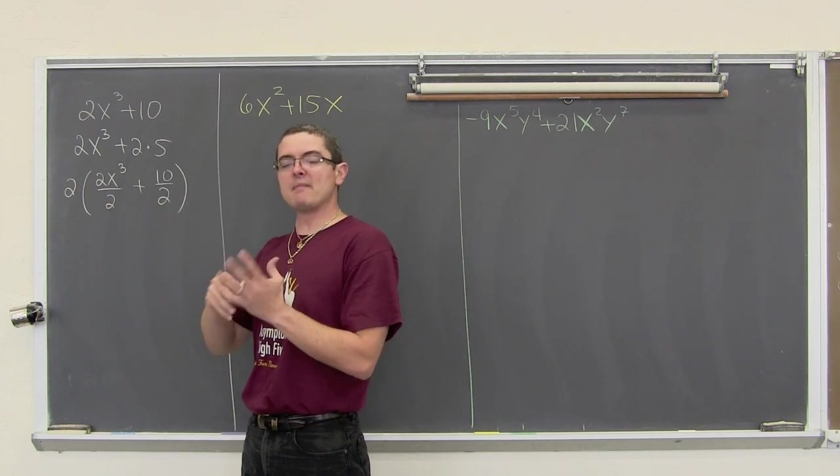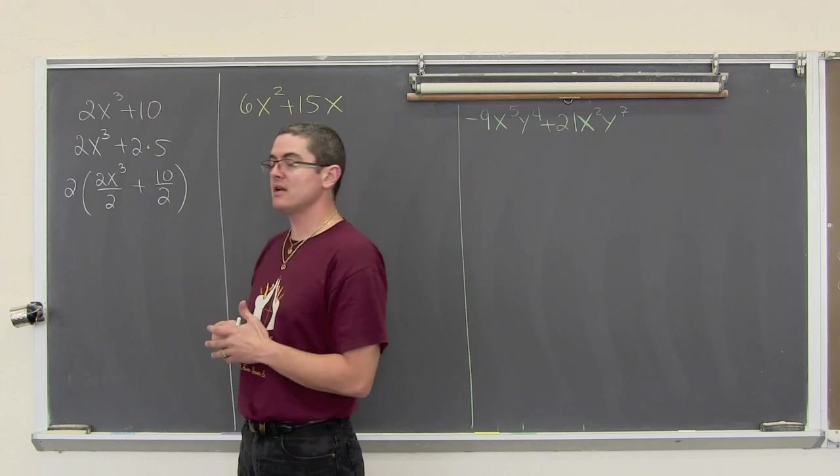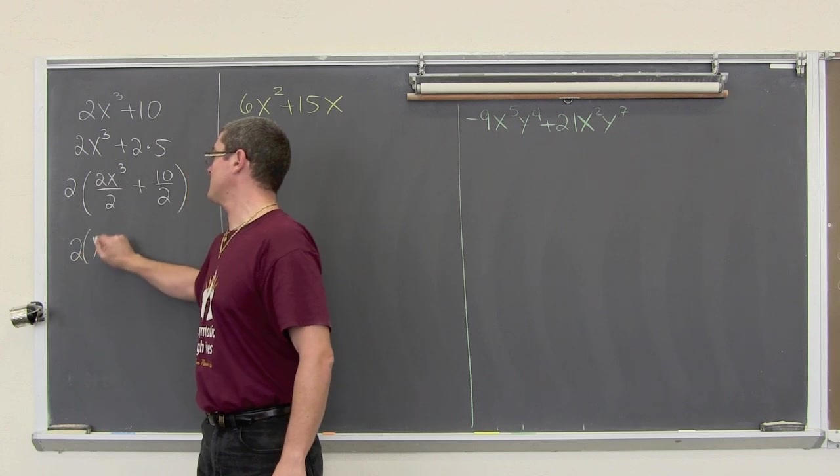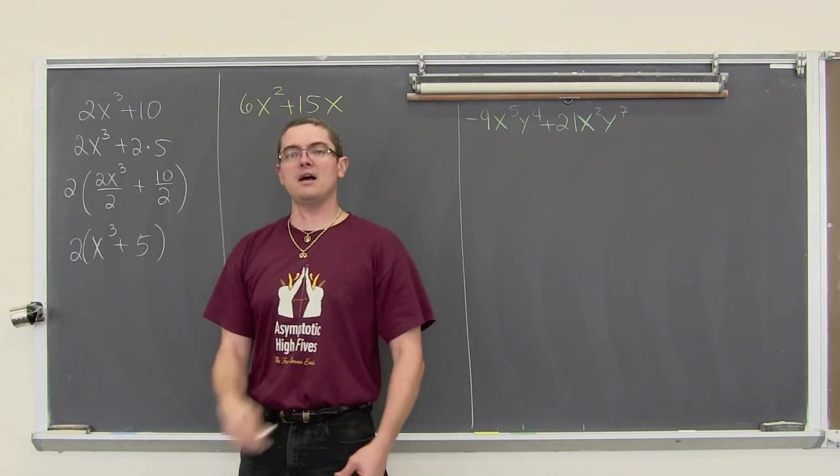This multiplication, of course, is the inverse operation of this division. So, these math operations are just balancing out. It is just making the polynomial look different. It is not changing its value. So, 2 divided by 2 is 1, so we have 2 times x cubed, and 10 divided by 2 is equal to 5. Voila!